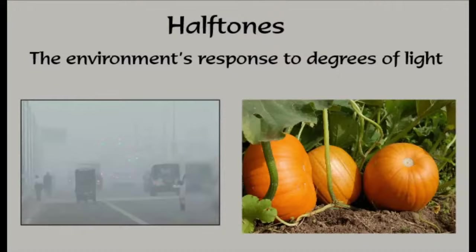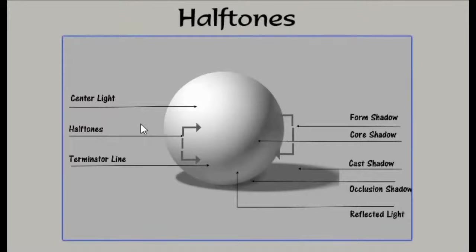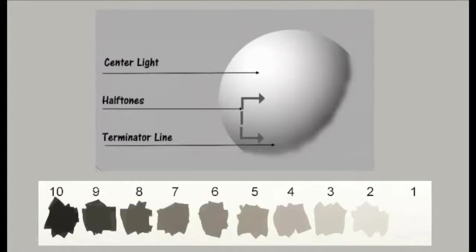Halftones are found in our environment's response to degrees of light. In direct light, we can predict where the halftones are going to be. We see this full diagram here of a sphere being lit, with the center light right here and the terminator right here. All those areas of degrees of light between the terminator — which is where shadow starts — and the center light are halftones.